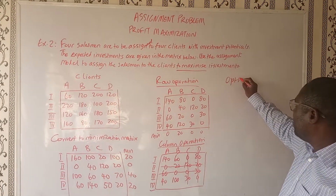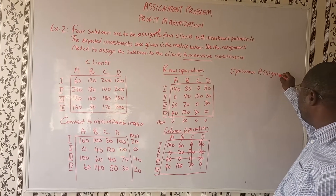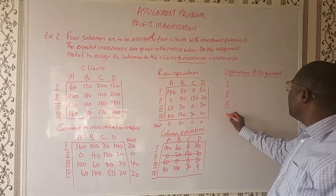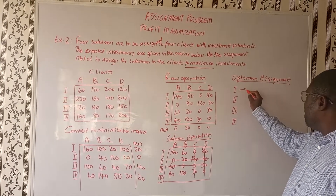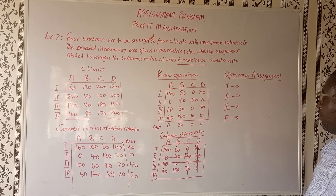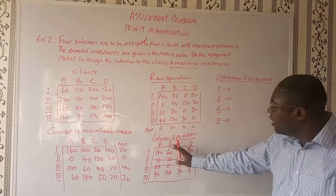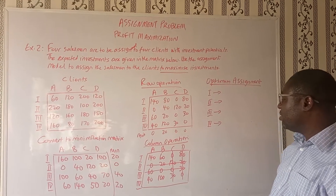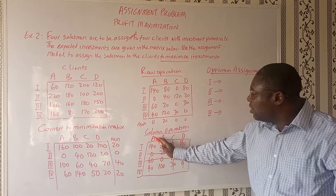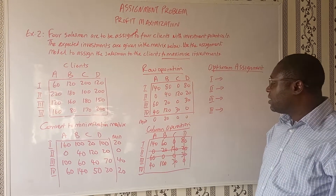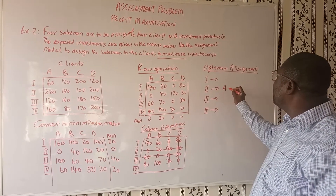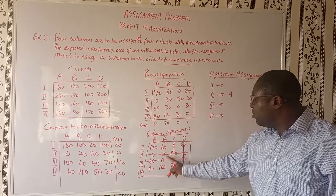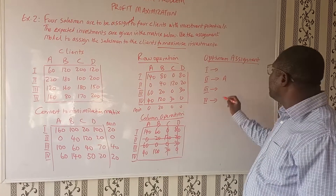Let's now assign the salesman to each client. We look at the matrix and identify the zeros that do not have any competition. For column A, there's no competition, so we're going to assign salesman two to A. Now look again — there's no competition here, so we're going to assign salesman three to B.